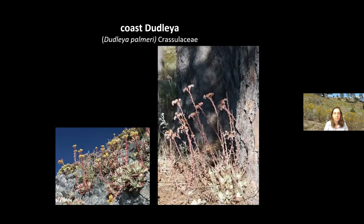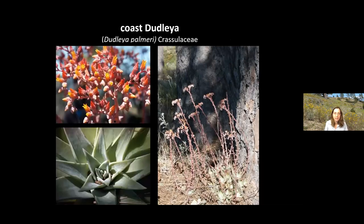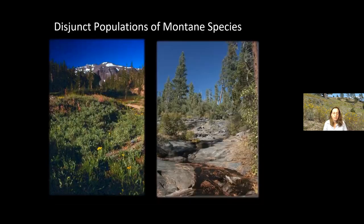Another coastal disjunct is Coast Dudleya, Dudleya palmeri. This species occurs along the coast as well as at the base of ponderosa pine trees in the Sandhills. What's more curious than the coastal disjuncts are the disjunct populations of montane species — species primarily found in the mountains and sometimes pretty far inland.